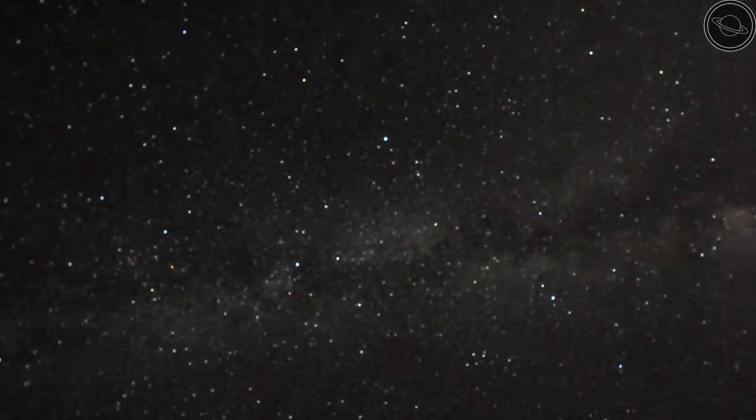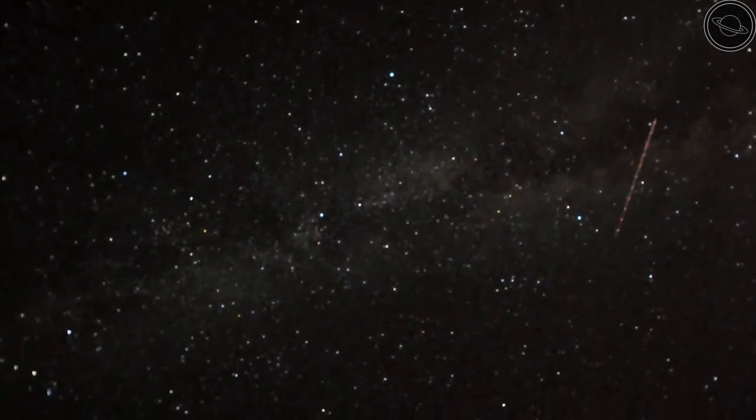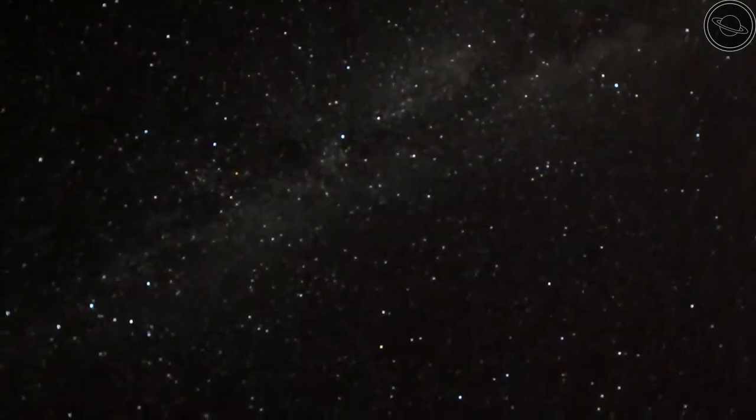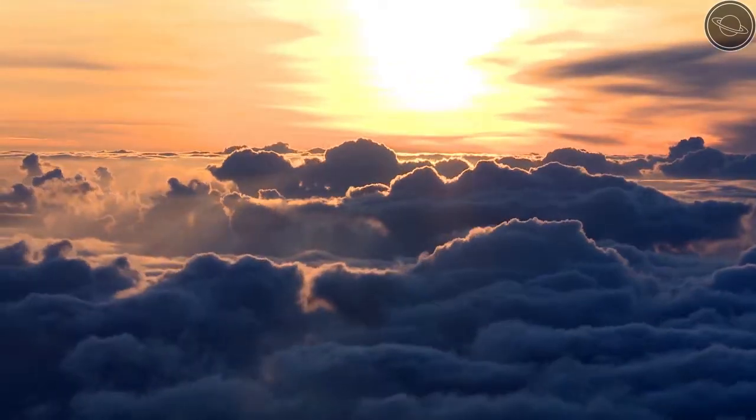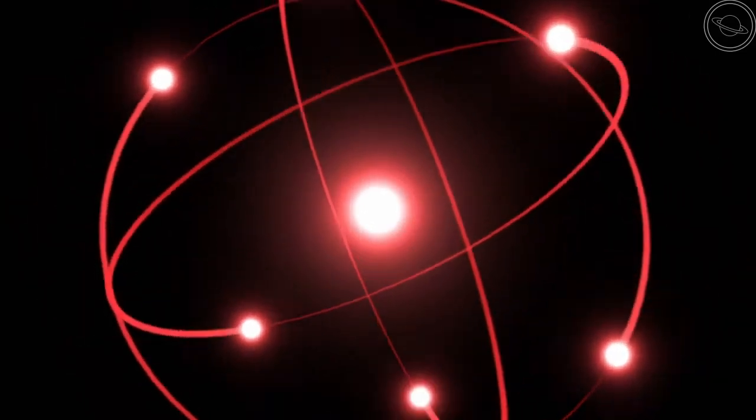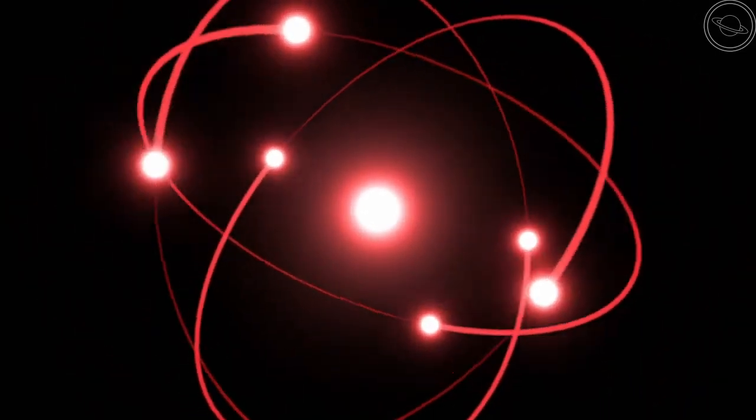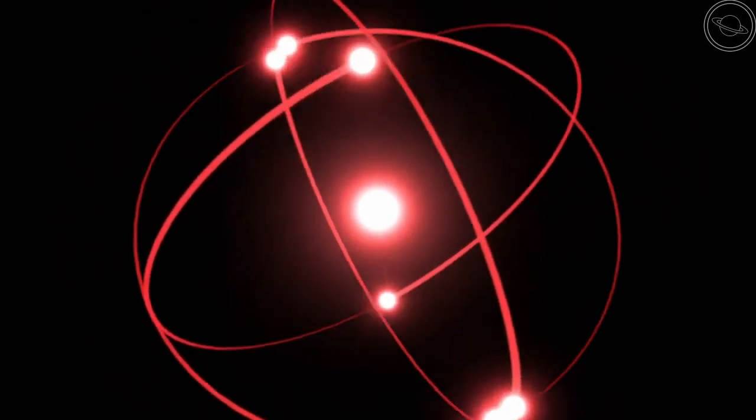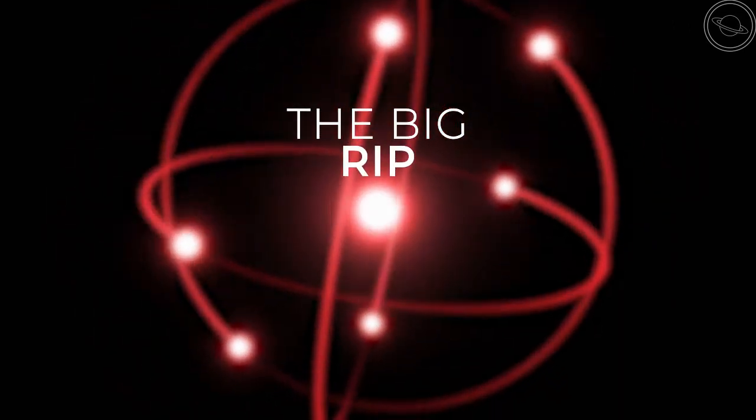and the observable universe will shrink until we can only see our own galaxy. But dark energy doesn't stop there. It will keep expanding space until the only objects that we can see are in our local star group, then only in our solar system, then only Earth. Eventually, dark energy will overcome the very forces that hold atoms together, and the most basic subatomic particles will be ripped apart. Hence, this theory is called the Big Rip.